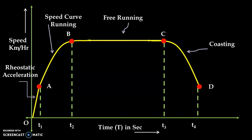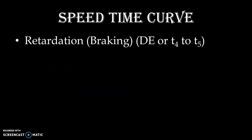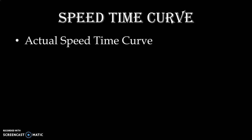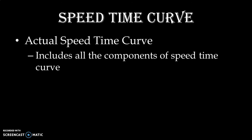At point D we apply the brakes, so from point D to point E is known as braking. Speed decreases and ultimately reaches zero at point E. The time required for braking is t4 to t5. This speed-time curve is known as the actual speed-time curve because it includes all the components of the speed-time curve.